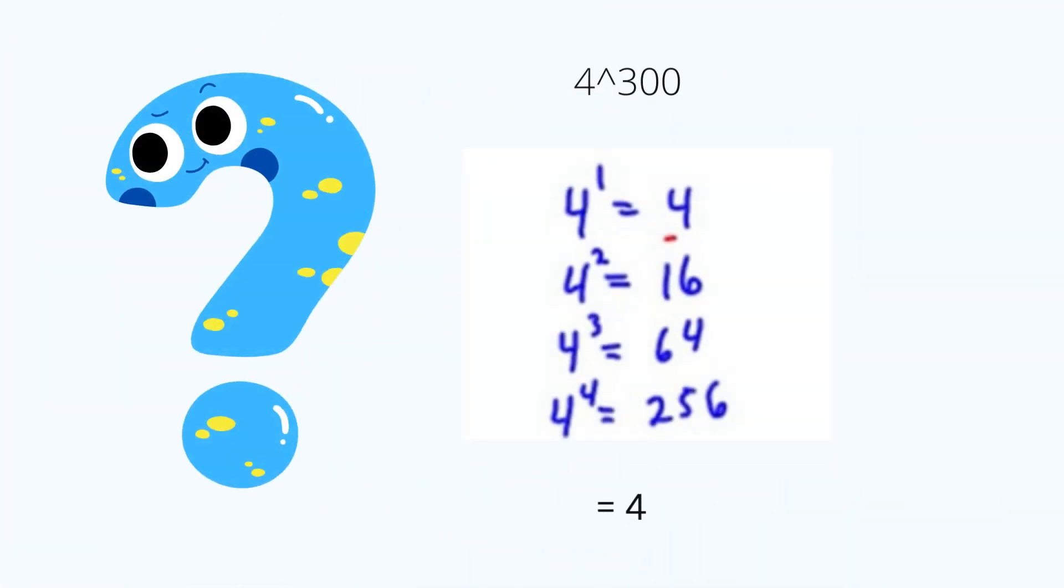So now, we're gonna determine the unit's digits in exponential expression. For example, 4 raised to 300. So first, we look at what is 4 to the 1st power.